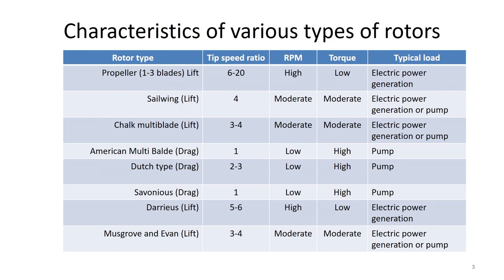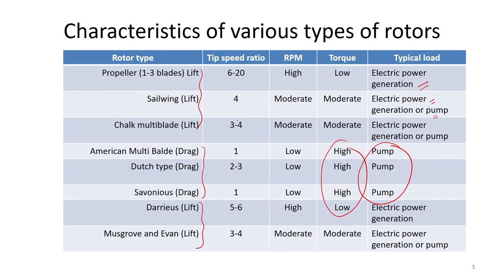If we talk about characteristics of various types of rotors, we have a variety of rotors we have discussed: propeller, American multi-bladed type, Savonius type and many more. Some rotors are based on the principle of drag design and some are lift design. Primarily, lift designs are used for power generation applications, while drag type machines are mostly used for pumping applications because they have higher torque compared to the lift type design.